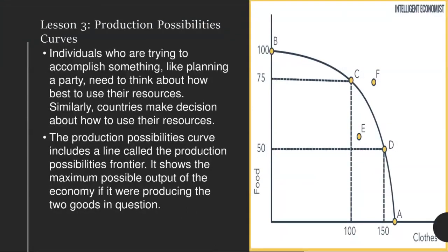Now to the final lesson of this unit — lesson three: production possibility curves. Economists use graphs called production possibilities curves to show alternative ways of using a country's resources. For example, an economist might examine the production of shoes and watermelons. A production possibilities curve can show how the number of shoes produced is affected by the number of watermelons grown. As the number of watermelons produced increases, the number of shoes produced will decrease, because land is scarce — more land for watermelon farms means less land for shoe factories. Similarly, as more shoes are produced, fewer resources are available to grow watermelons.